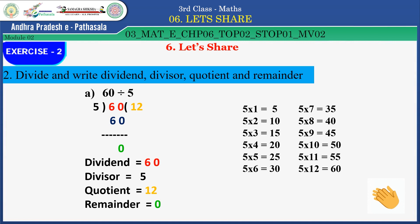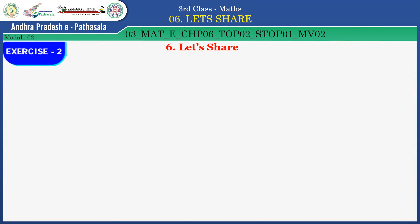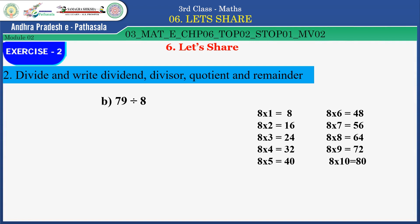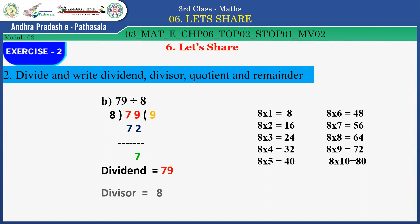Now look at this problem: 79 divided by 8. Recall the 8 times table. 8 × 9 = 72. 79 minus 72 gives remainder 7. So: dividend is 79, divisor is 8, quotient is 9, and remainder is 7. Well said, children.